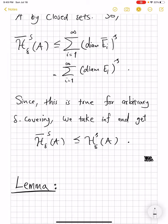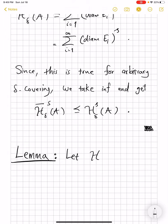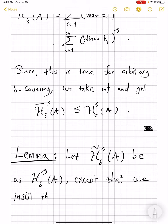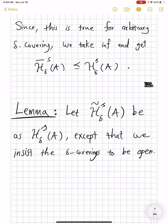This one is a bit different. So let H̃^s_δ(A) be as H^s_δ of A, except that we insist the delta coverings to be open, so every element in the delta covering must be an open set. And what we have this time is that H^s of A, which is the limit by definition, which is the limit delta goes to 0 of H^s_δ of A, equals the limit delta goes to 0 of H̃^s_δ of A.